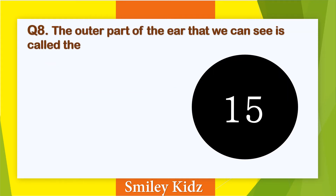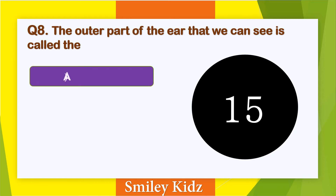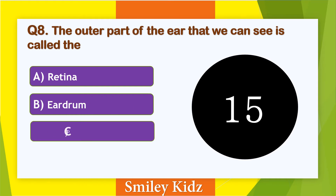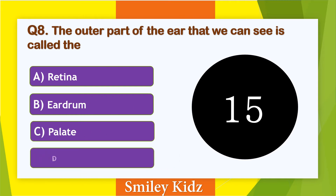Question number 8. The outer part of the ear that we can see is called. Options are: A. Retina, B. Eardrum, C. Palette, and D. Pinna. Your time starts now.